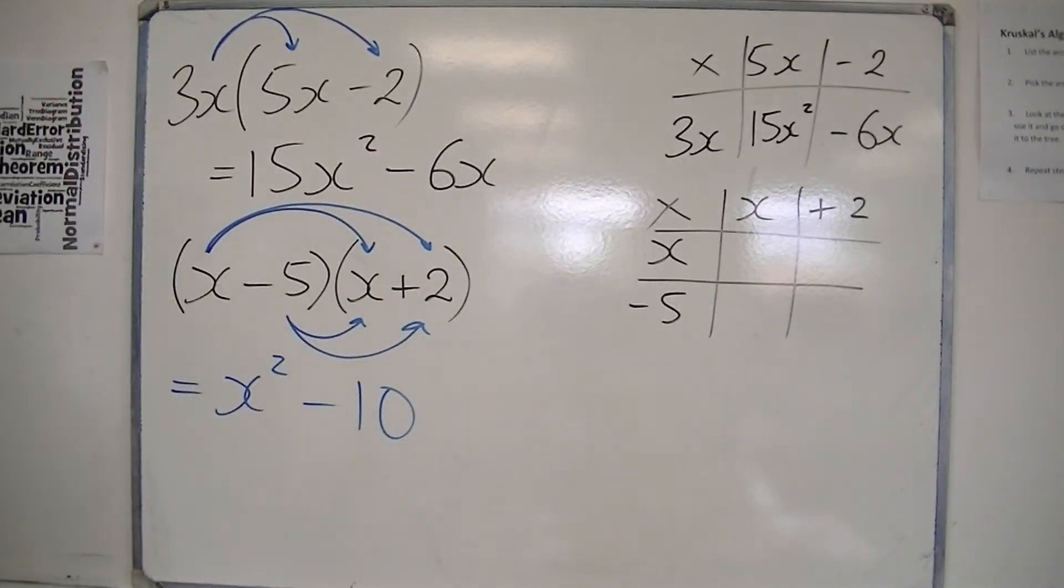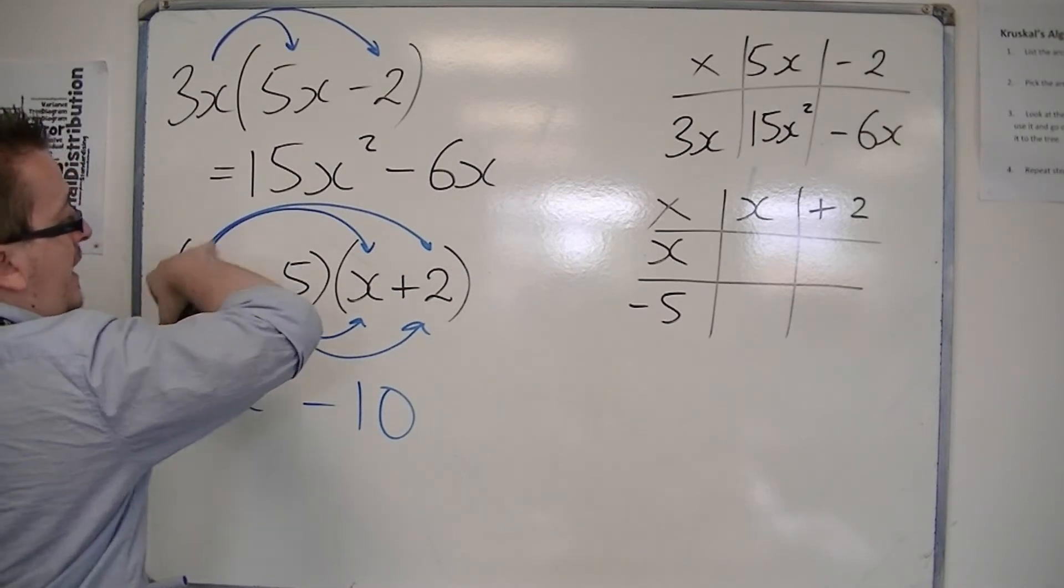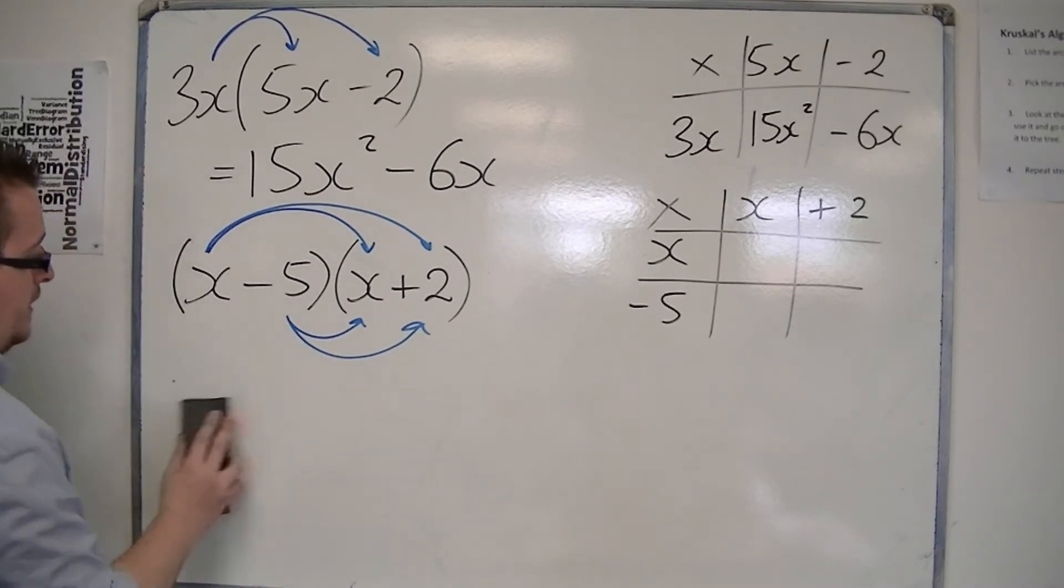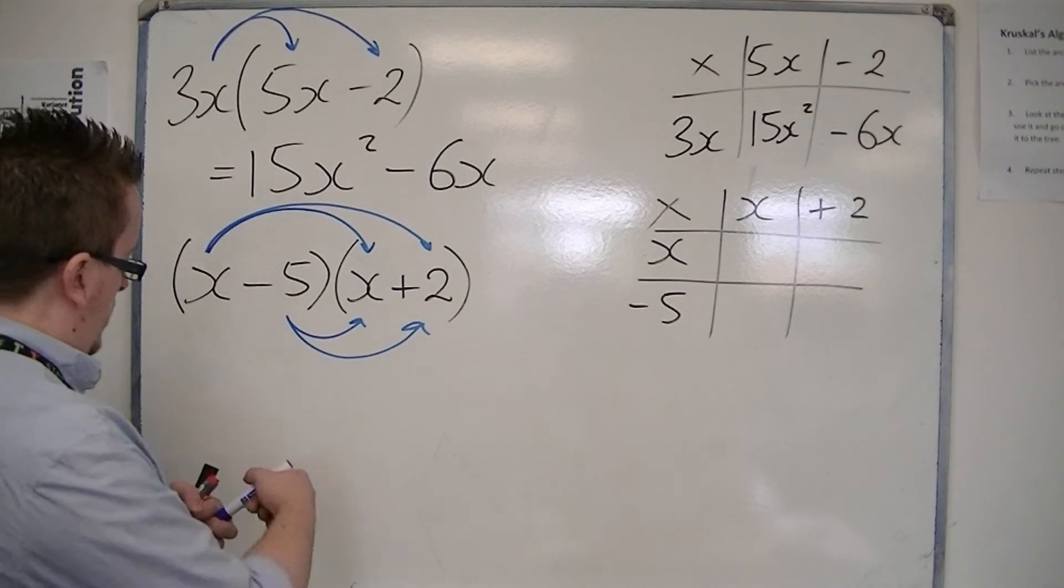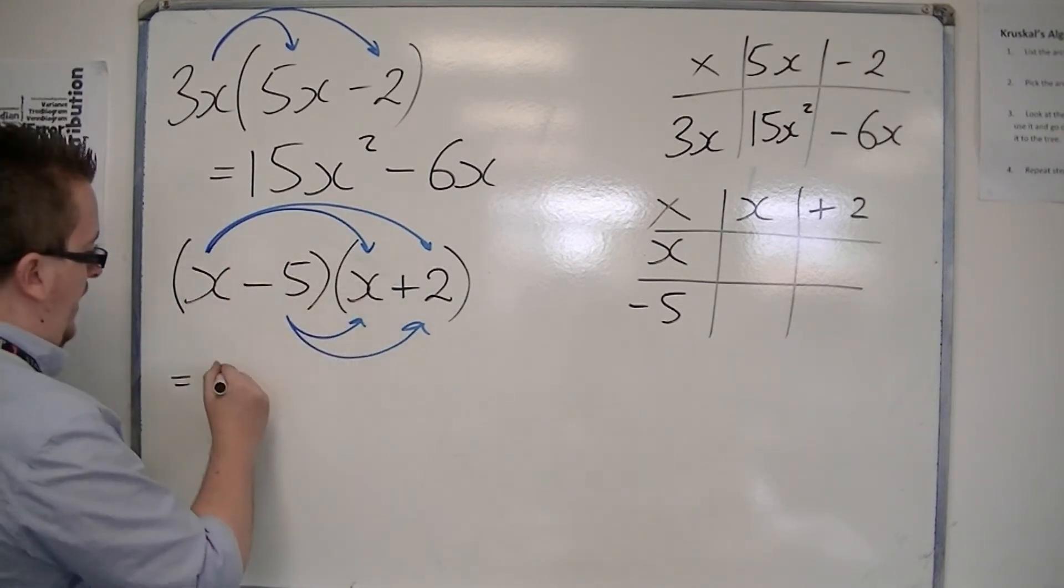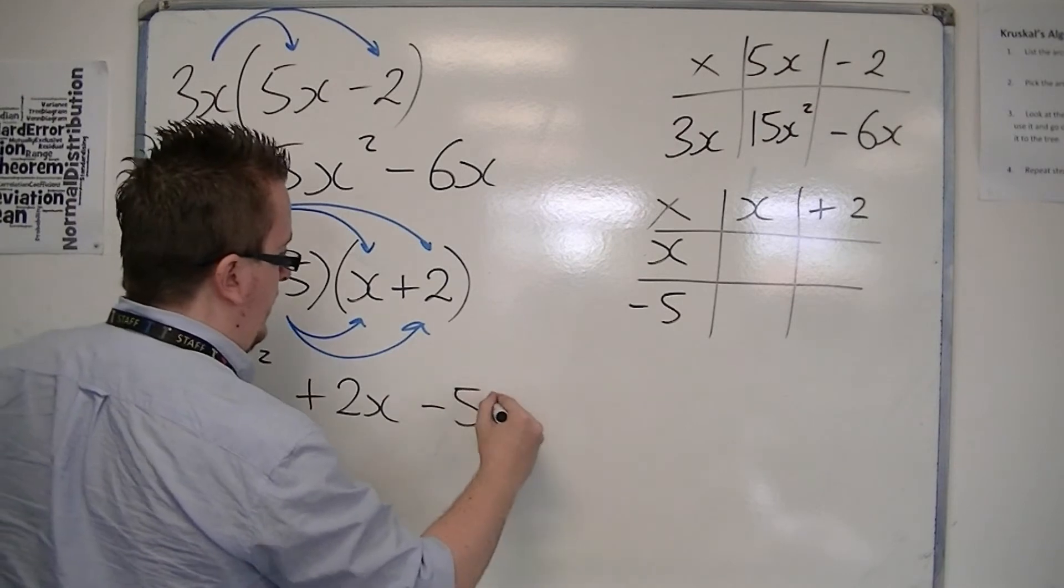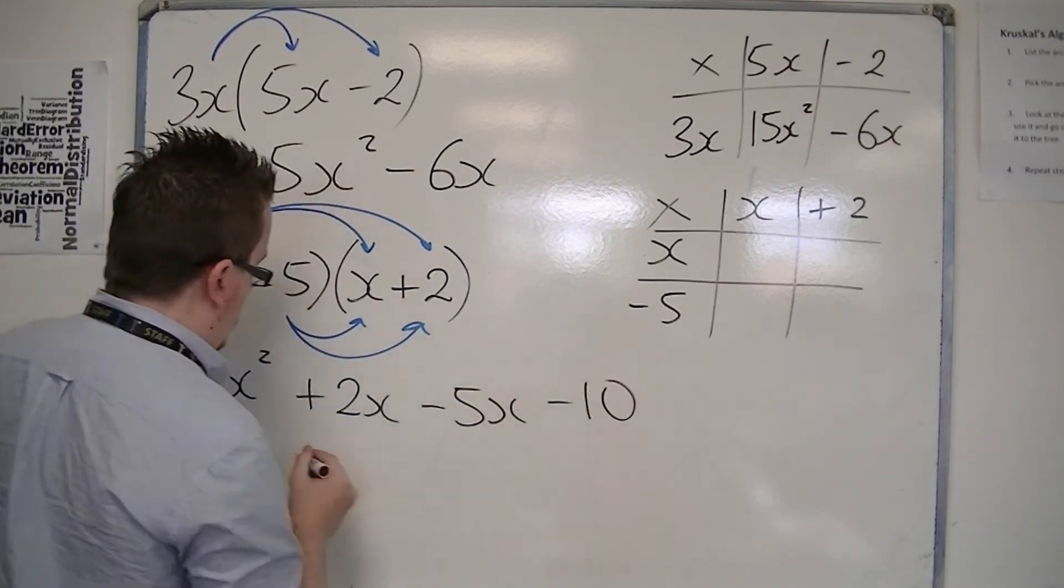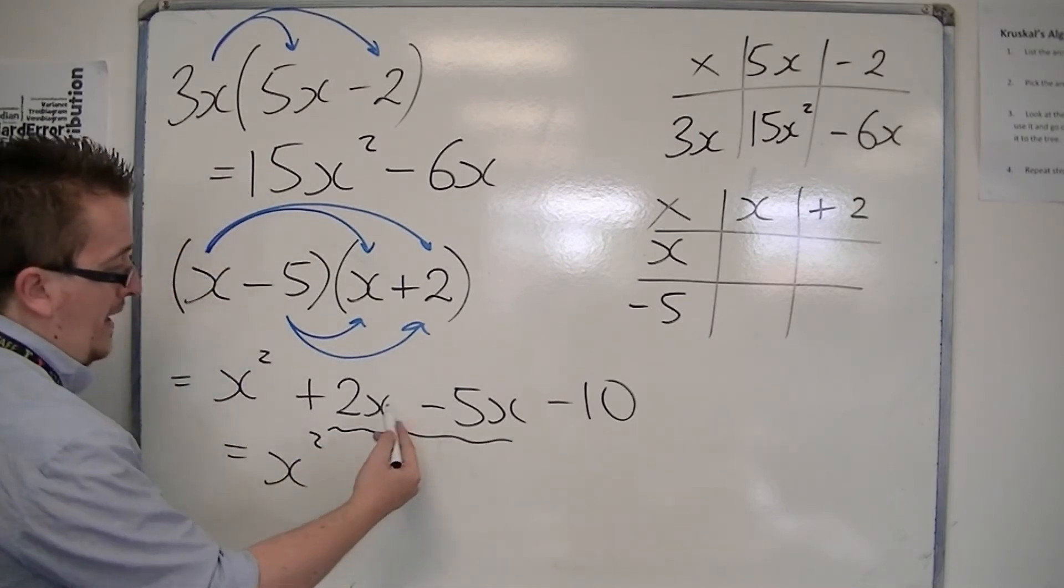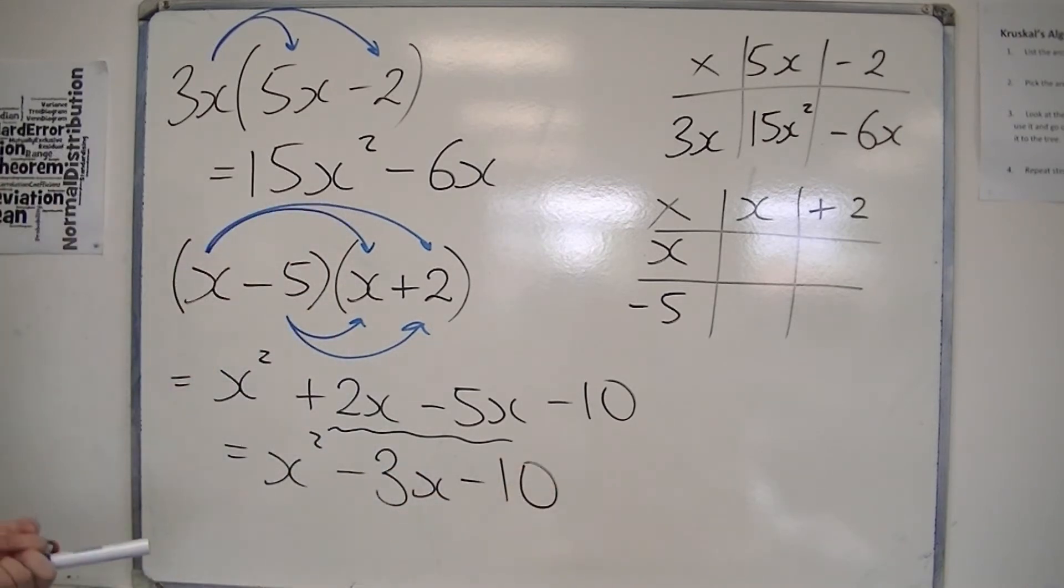You might spot the reason why that's not correct—they have not multiplied x by the 2 and the minus 5 by the x. So there needs to be another term there, the linear term. We have x times x is x squared, x times 2 is 2x, minus 5 times x is minus 5x, and minus 5 times 2 is minus 10. Then you can combine these two terms: 2x take away 5x is minus 3x. That is expanded correctly.